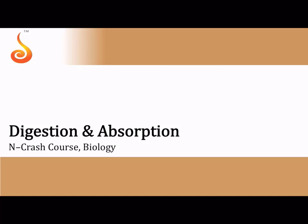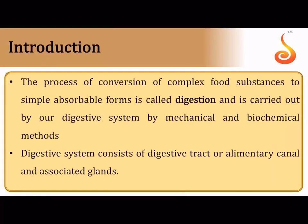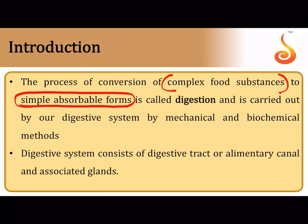We will discuss a quick synopsis of the chapter Digestion and Absorption. Digestion is needed to convert complex food substances into forms that can be absorbed into the bloodstream, because they need to be transported to different cells in the body. So digestion ensures that complex food substances are broken down into simpler, absorbable forms.